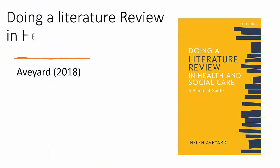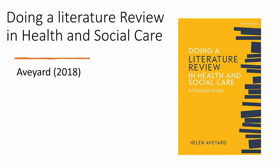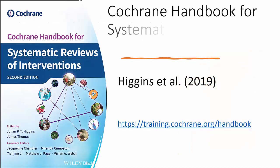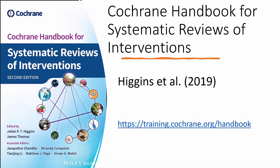Next I have Helen Aveyard's Doing a Literature Review in Health and Social Care — I believe the latest edition is from 2018. This book is often used in the final year research module for nursing and other health-related degrees. Many aspects of carrying out a literature review transfer naturally over to a systematic review, so this is a gentle introduction. It also has the advantage of being very student-friendly. Of course I mustn't ignore the Cochrane Handbook for Systematic Reviews of Interventions, now in its second edition — the industry standard, freely available electronically via their website.